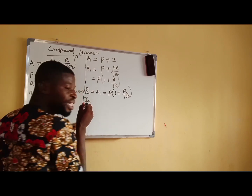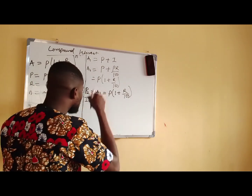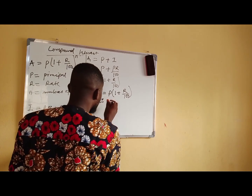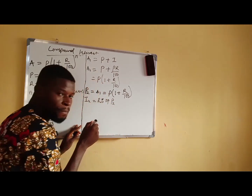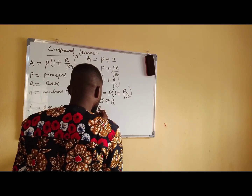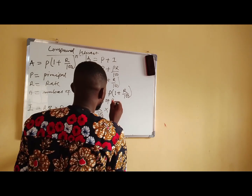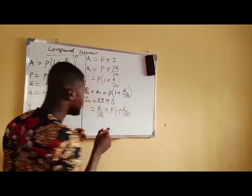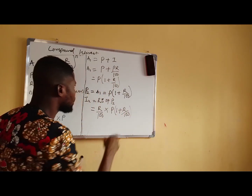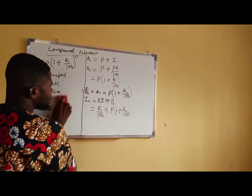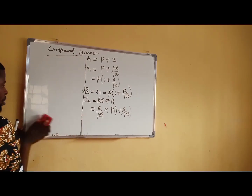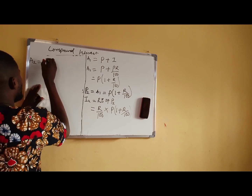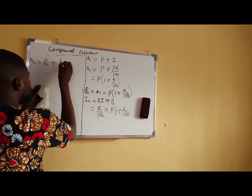Now, the interest in the second year, I2, will be equal to R percentage of P2. This is the same thing as R over 100 multiplied by P2, which is equal to P in bracket 1 plus R all over 100. From this point, we have that A2 is equal to P2 plus I2.